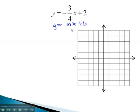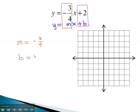From this, we can quickly identify that m, the slope, is negative 3 fourths, and b, the y-intercept, is 2.